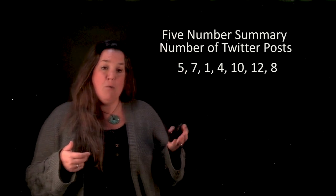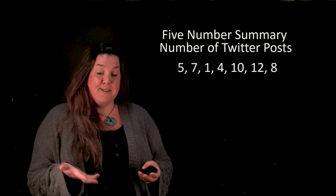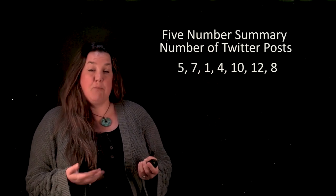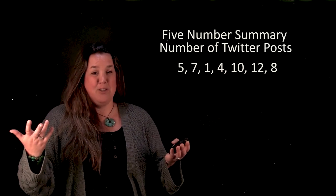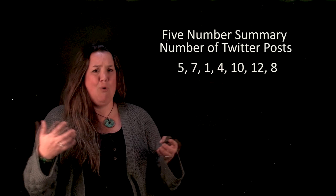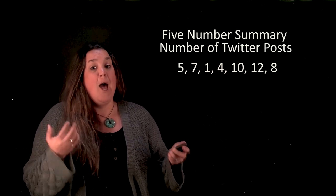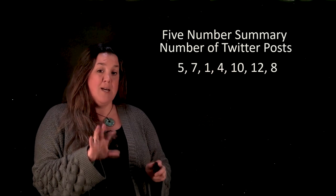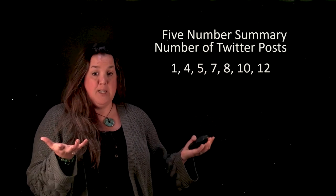So we have a five-number summary and we're going to be looking at the number of Twitter posts. Now one of the things that's really important with a five-number summary is the data has to be in order. Now if you're using a computer package you don't have to worry about putting it in order, that's what the computer is for, it'll do it for you. However if you're going to find it by hand you need to put the data in order. So here's the same data set but the data is in order.